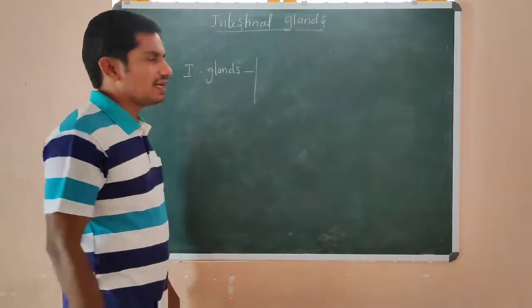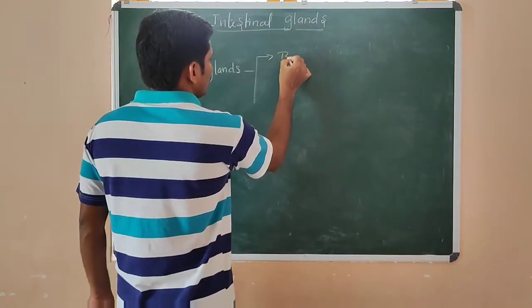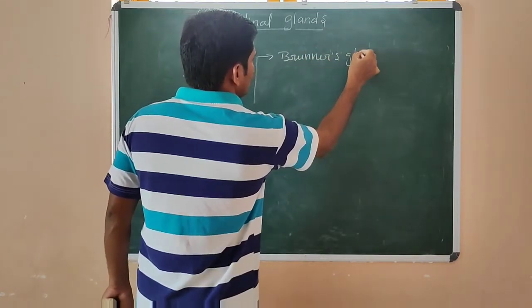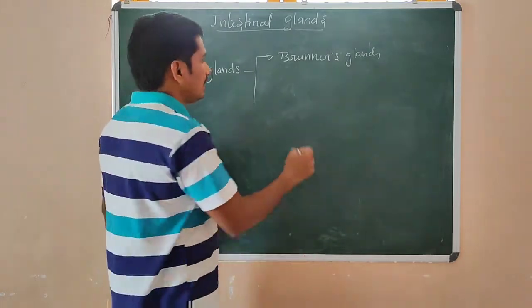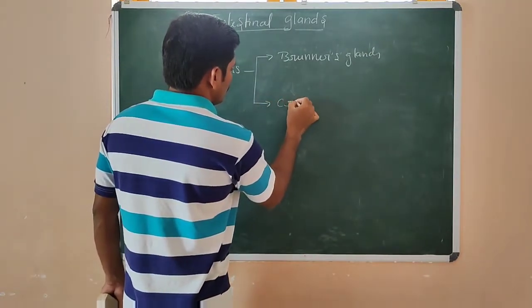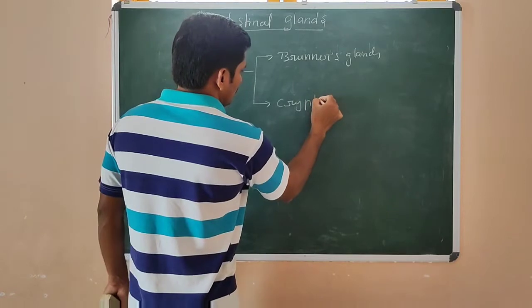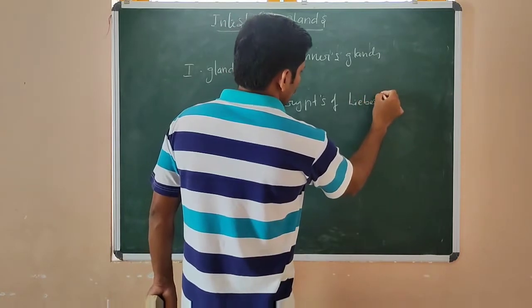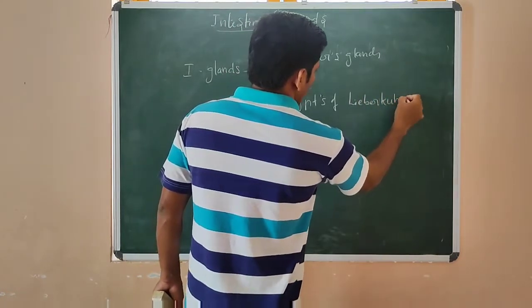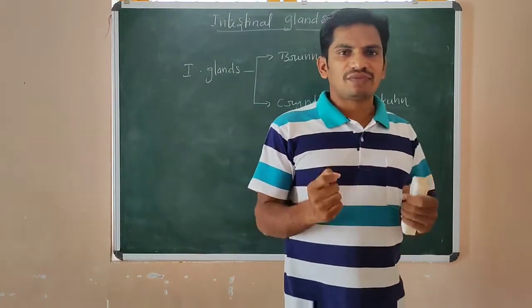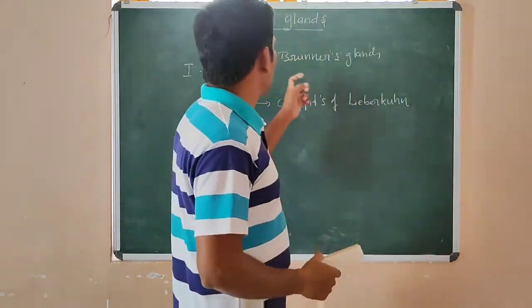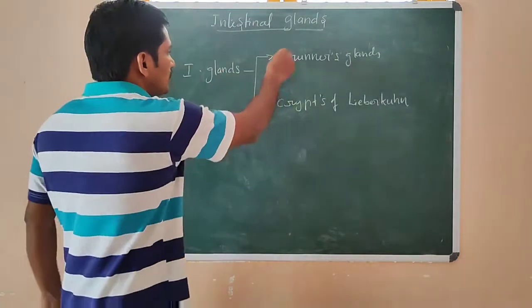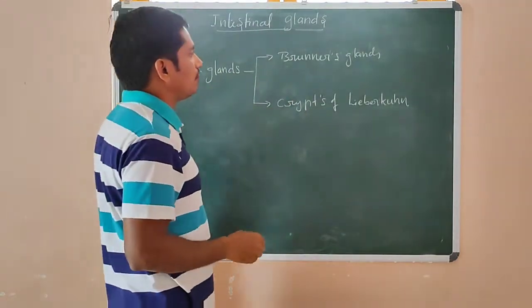The first one is Brunner's gland. The second one is the crypts of Lieberkühn. Intestinal glands consist of two types: first one is Brunner's gland and second one is the crypts of Lieberkühn.